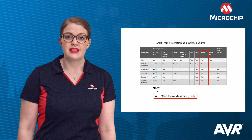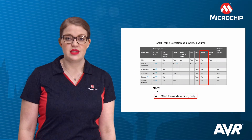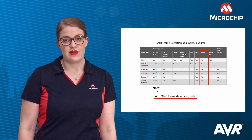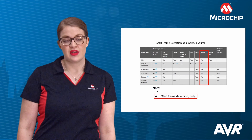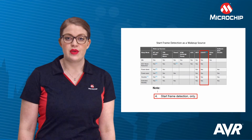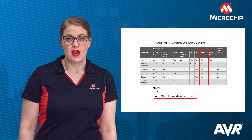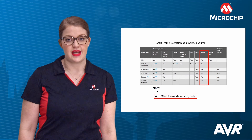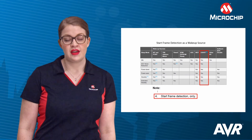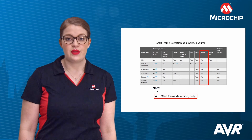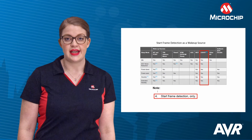The start frame detector can wake the MCU from power down and standby sleep modes when the start bit is detected, if enabled. The internal RC oscillator will be started to receive the rest of the frame, but the baud rate must be slow enough in relation to the oscillator's startup time. If enabled, a receive start interrupt will be generated when the start bit is detected.